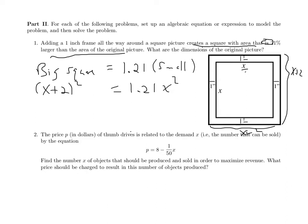Eventually, the answer is that x, the dimension, should be 20. So there should be a 20 by 20 original picture and a 22 by 22 inch frame. And you can check that that has the right relationship.